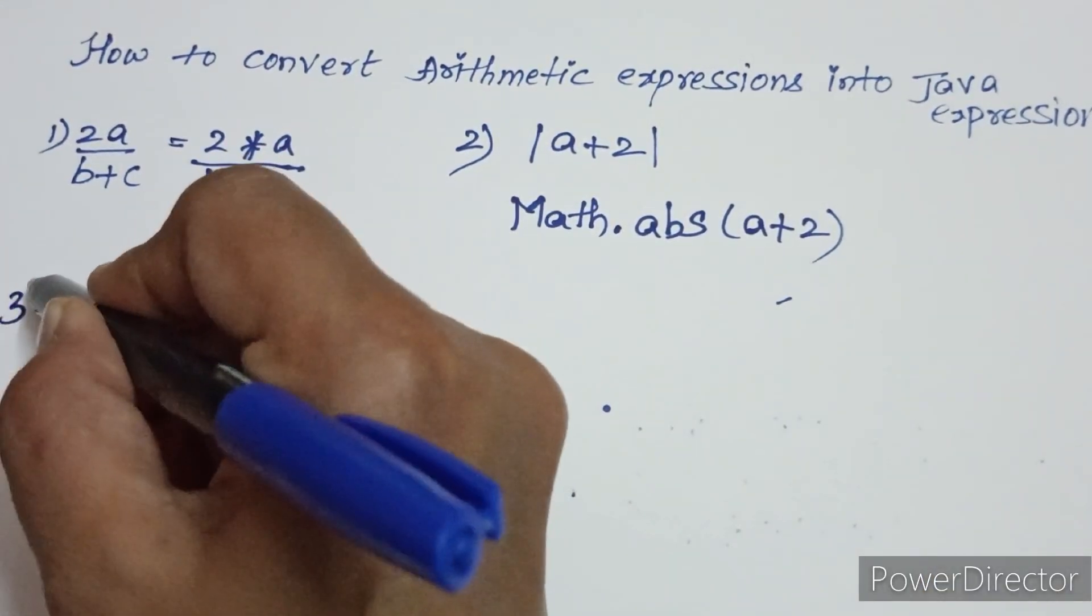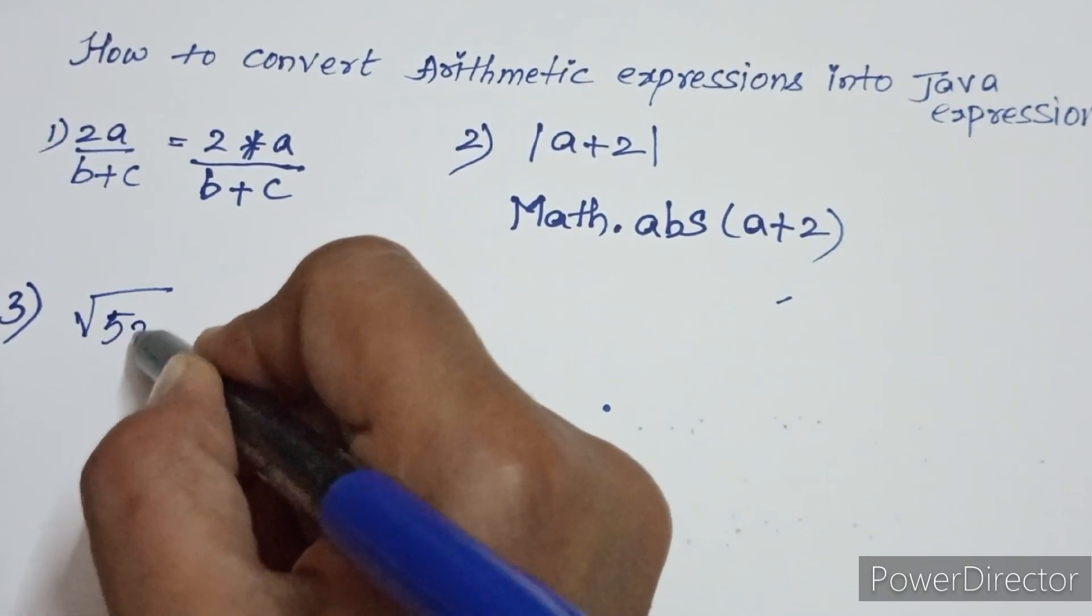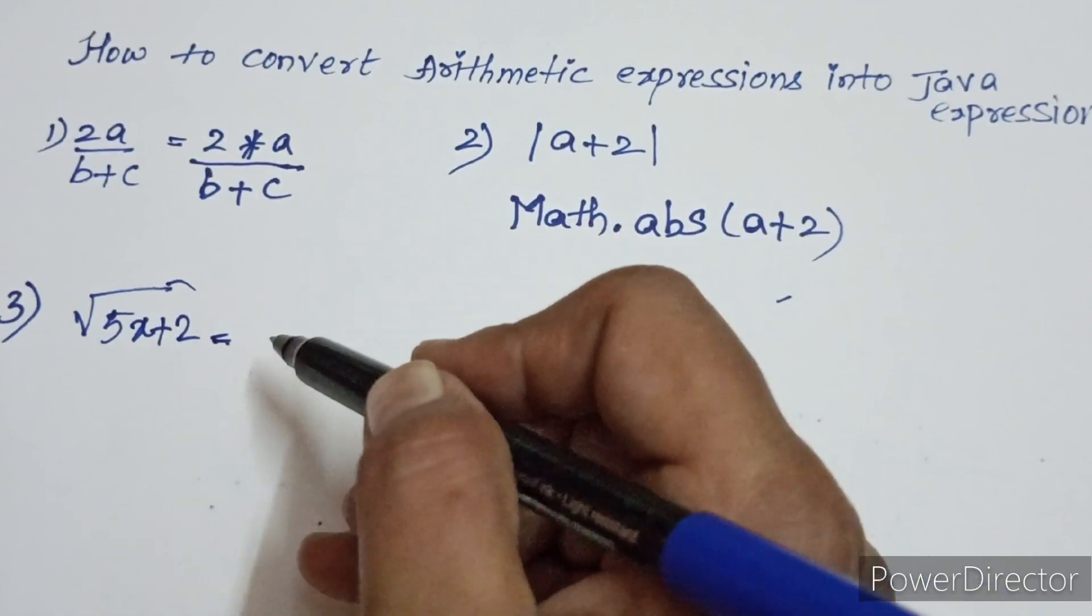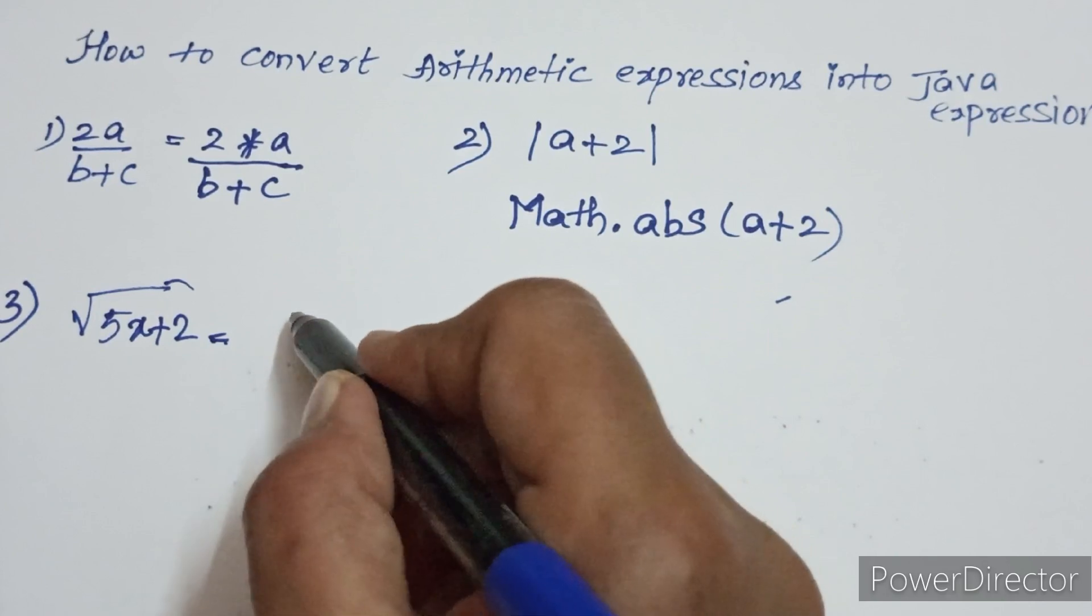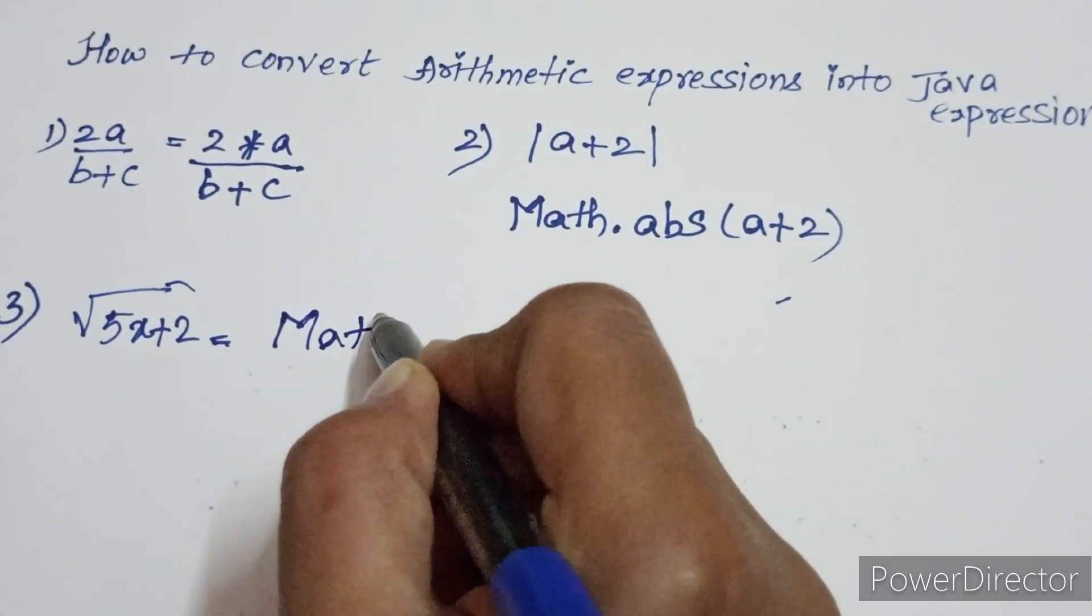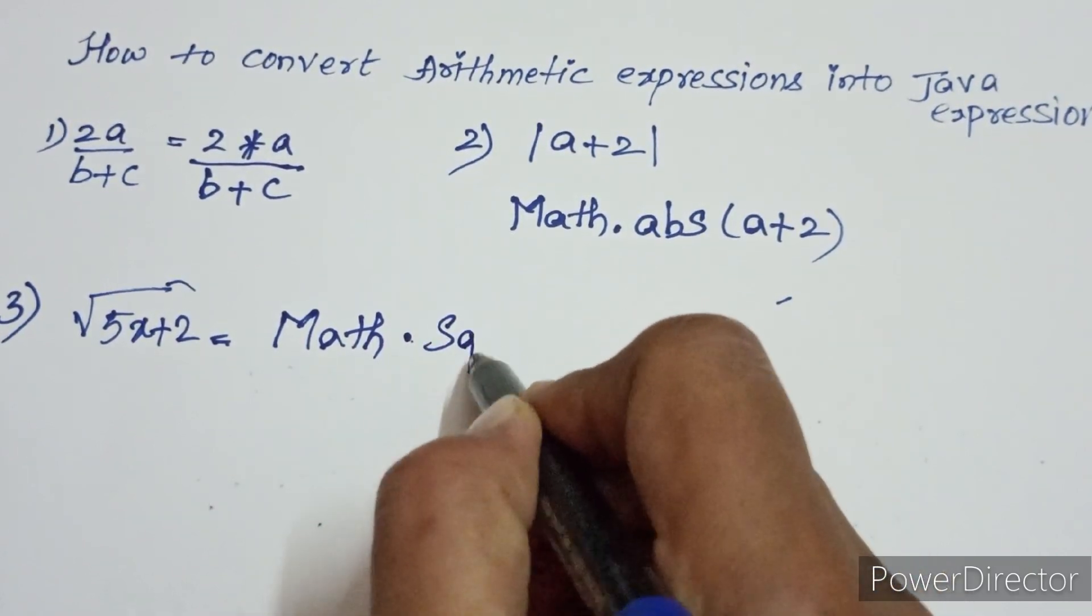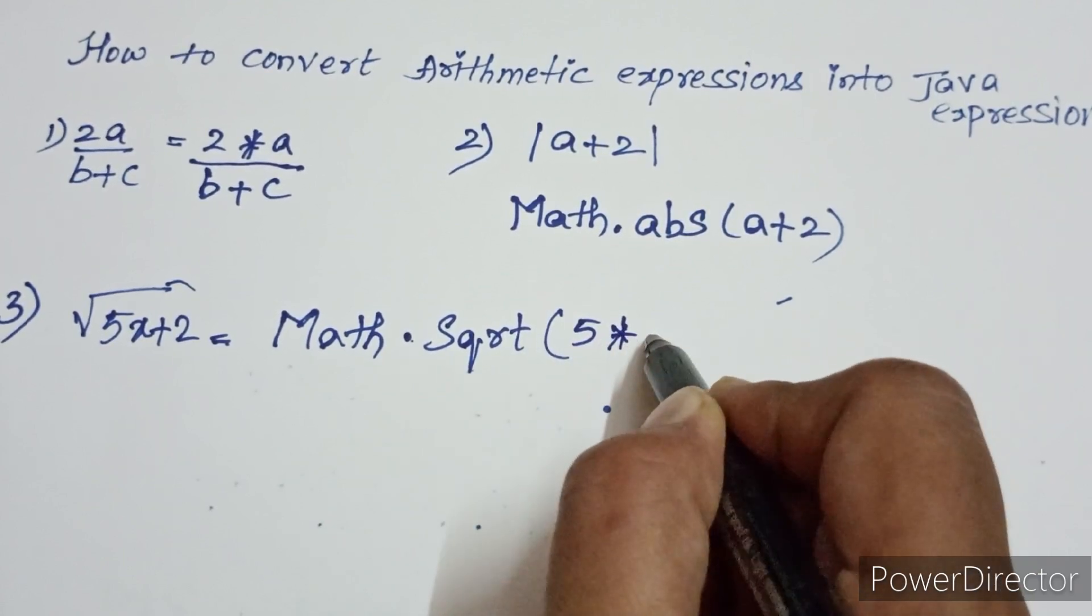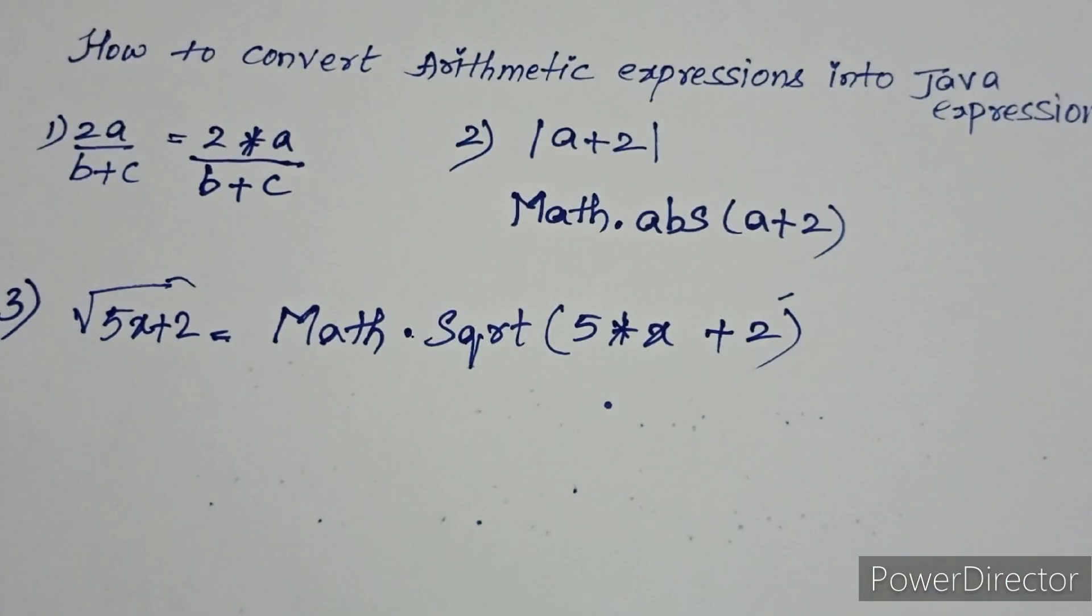Let's do one more example: square root of 5x plus 2. How will you write square root? You have one predefined method called square root that is present in your Math class. Math dot sqrt, square root of 5x will be written as 5 into x plus 2.